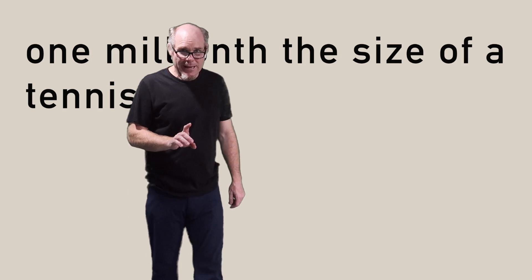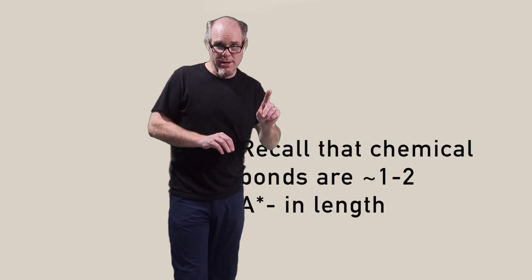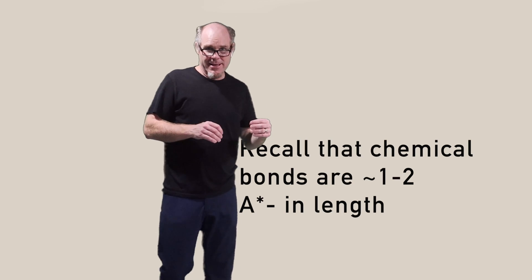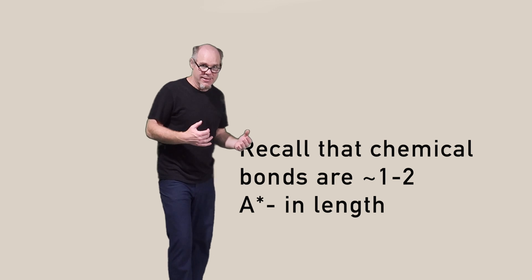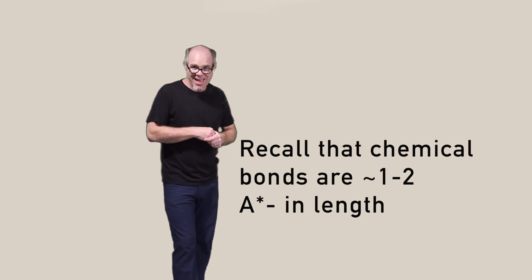Let's recall that chemical bonds are between one and two angstroms in length. That's why chemists often use angstroms rather than nanometers. It's the natural unit of the chemical bond. So when I say 700 angstroms, you can think of that as 500 atoms across.